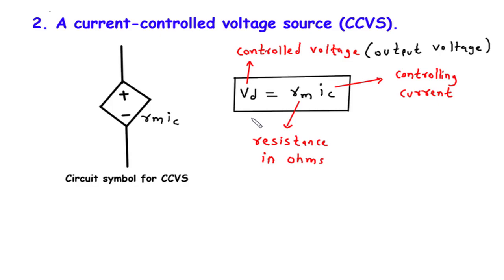Let's begin by understanding the basic principle behind a CCVS. A CCVS is a type of electronic component that provides an output voltage that is directly proportional to the controlling current passing through a different part of the circuit.